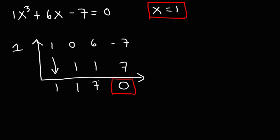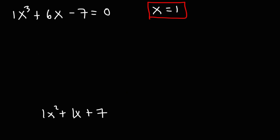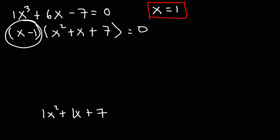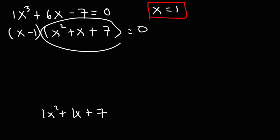Now let's turn this into a factored form. The synthetic division results give us the constant 7, the coefficient of x, and the coefficient of x squared. So we can rewrite the equation as (x minus 1) times (x squared plus x plus 7).